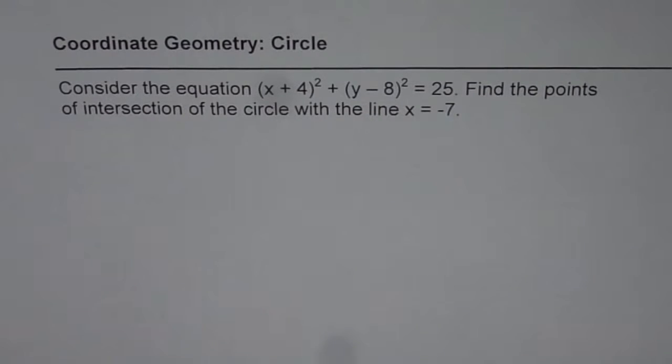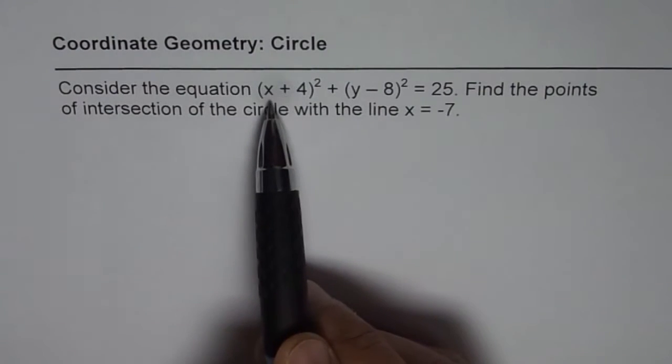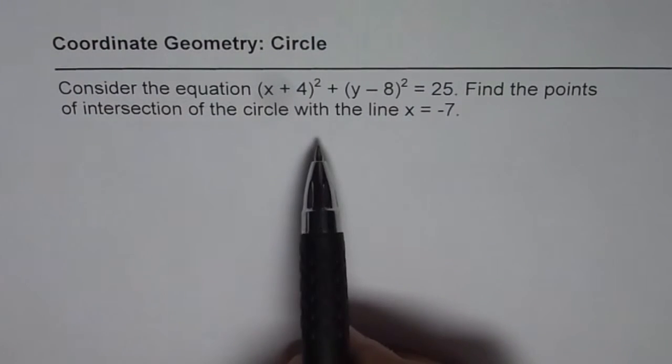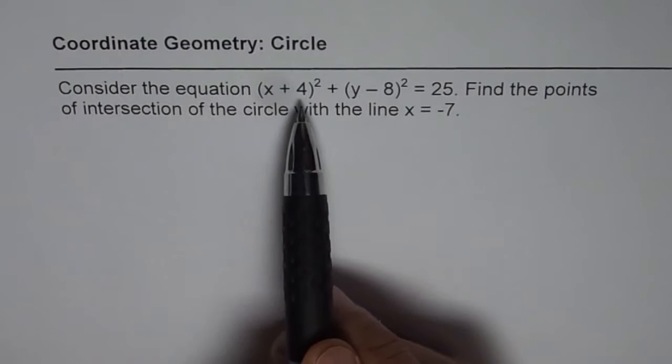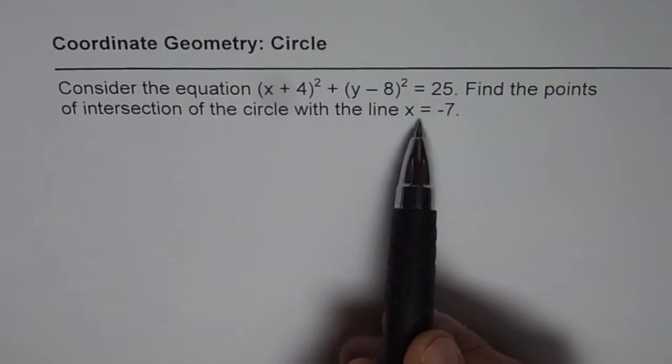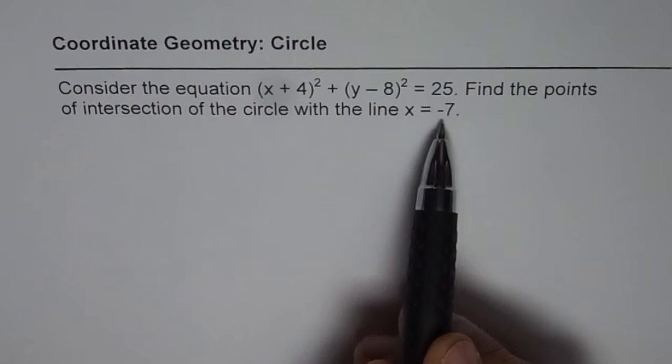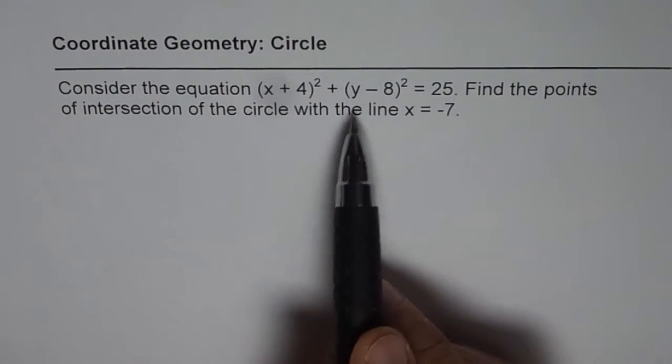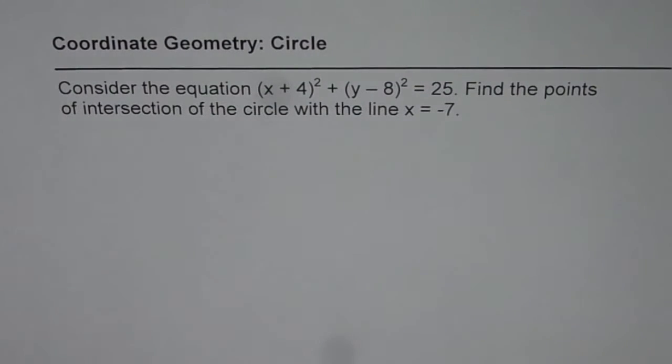This circle has been translated 4 units to the left and 8 units down, so the center is at (-4, 8). We have x = -7, so the vertical line will intersect the circle at 2 points. When you find the answer, be careful that you should get 2 points where it intersects the circle.